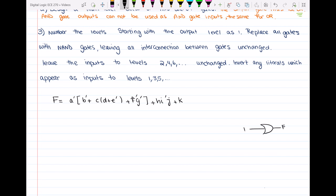And we can clearly see that the output gate is one k, and then I have one h i prime j and one that big parentheses over there, which is this one.